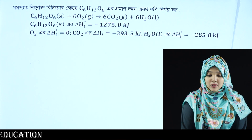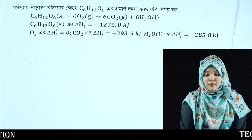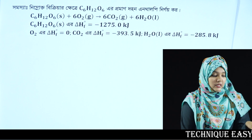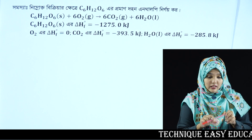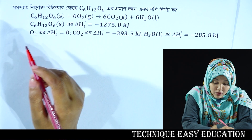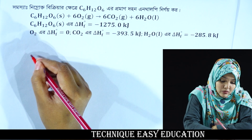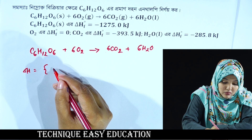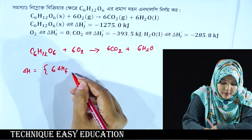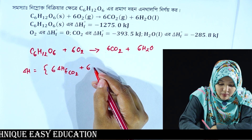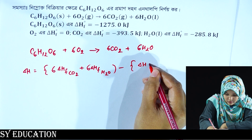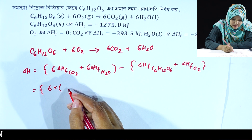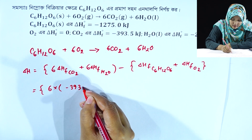So, negative 3.5 kilojoule, and water is minus 285.8 kilojoule. To find the enthalpy of the reaction — that is, the heat value of the reaction — we write ΔH equal to the enthalpy of formation of products minus reactants. Products here are carbon dioxide and water, and carbon dioxide is minus 393.5.